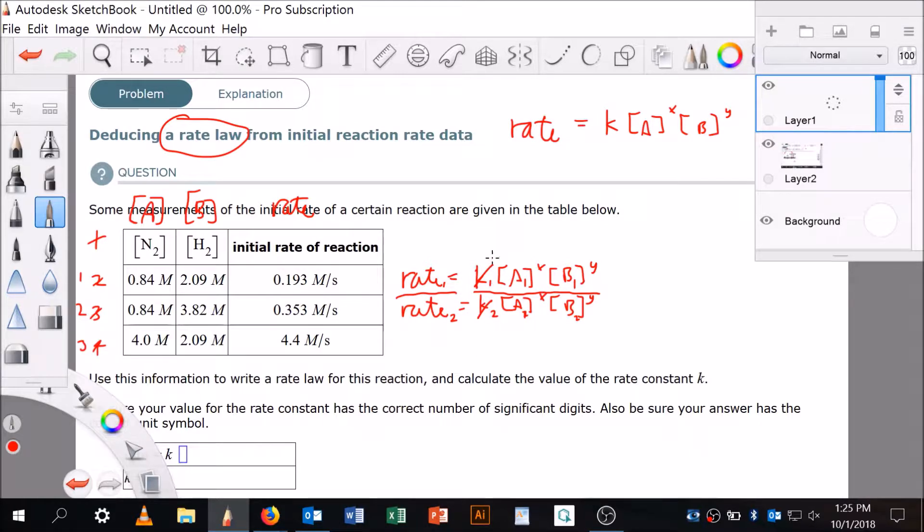We know that k is a constant, so I can just cancel those out. We also know that if we chose a trial where A does not change, then these are also equal, so those will cancel. You see, we can conveniently calculate what Y is because B does change and the rate changes. What we're seeing here is the effect of the change of initial concentration of B.